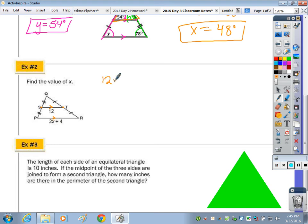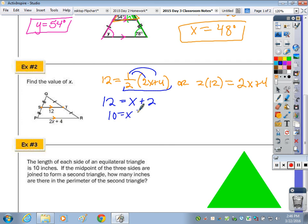You can say that 12 is equal to half of 2X plus 4, or you can say 2 times 12 equals 2X plus 4. No matter which equation you solve, you should get the same answer. What is half of that binomial? Half of 2X is 1X, half of 4 is 2. Subtract the 2, and X is 10. So we should get that on the right side. 2 times 12 is 24. Subtract the 4, you get 20. Divide by 2, and X is 10.